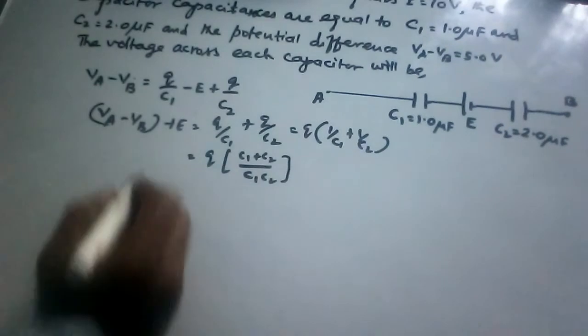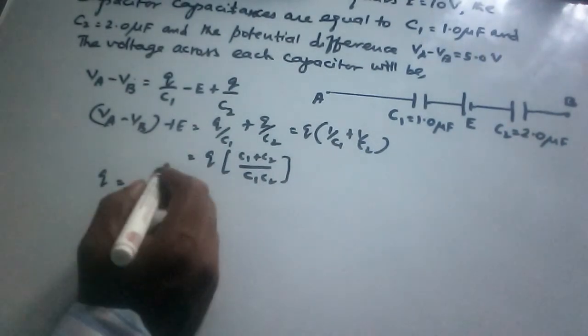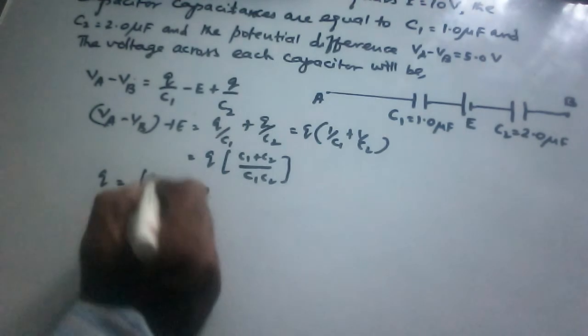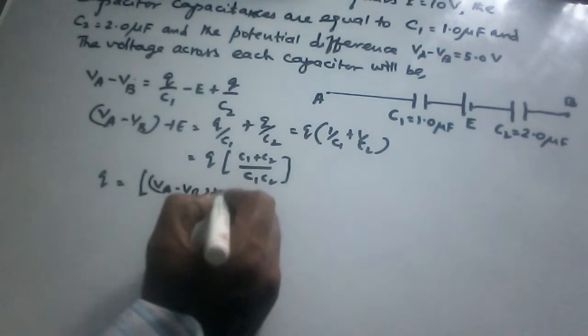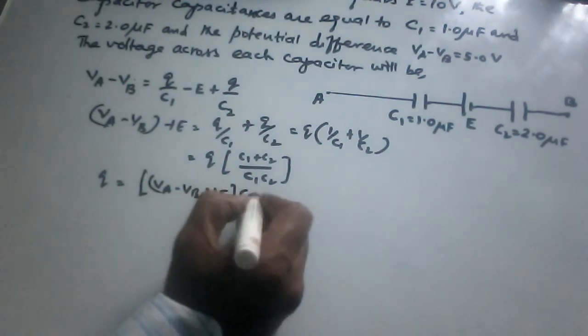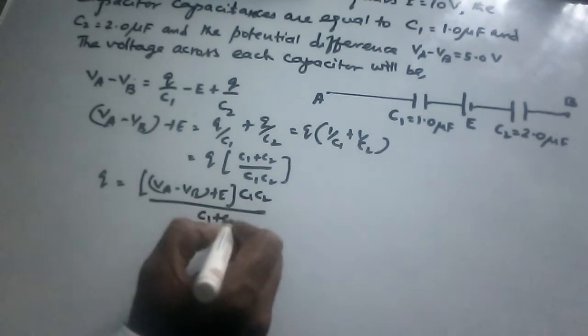From this equation we can get the value of Q: Q equals (VA minus VB plus E) times (C1 times C2)/(C1 plus C2).